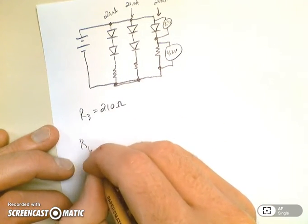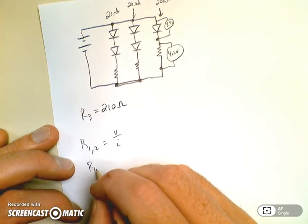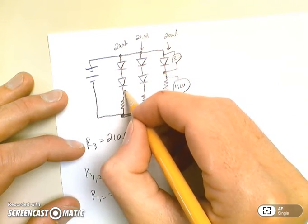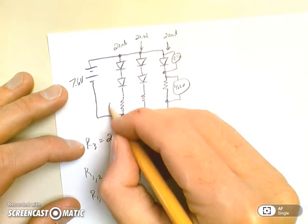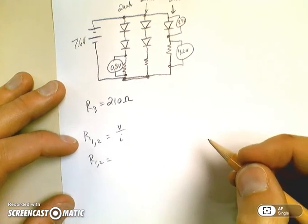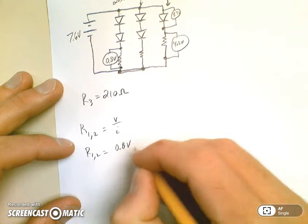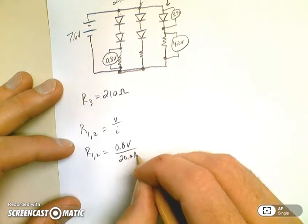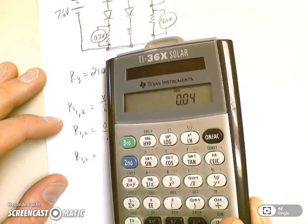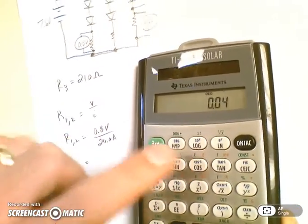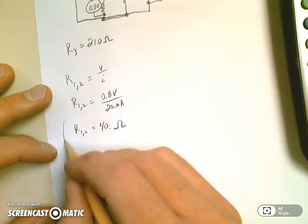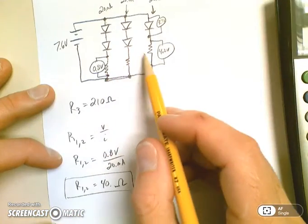So R value of 1 and 2 is equal to V over I. We need to find the voltage drop. Well, if this is 3.4 and this is 3.4, from there to there is 6.8. And we want to attribute drop 7.6, so this is going to give us 0.8 volts from here to here on that resistor. So we have 0.8 volts over a current of 20 milliamps. If I take 0.8 divided by 20, I get this and that's milliamps. So it turns out this is 40 ohms for my resistors 1 and 2. So I have 40 ohm resistors there, a 210 ohm resistor there.